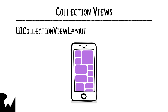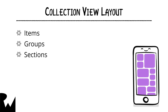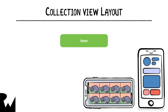This is where you define how the data is presented. Layout objects are built up using three building blocks: items, groups, and sections. An item is the smallest unit in this hierarchy, and represents an individual piece of data that you want to display on screen.